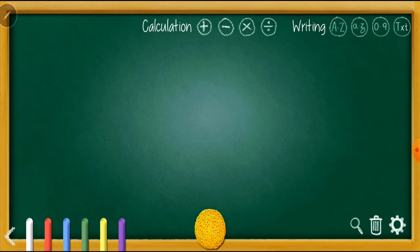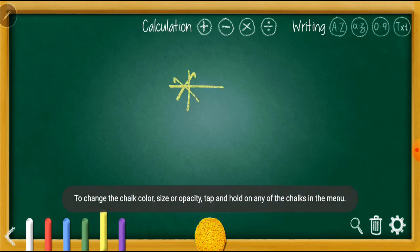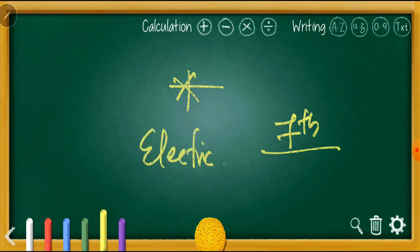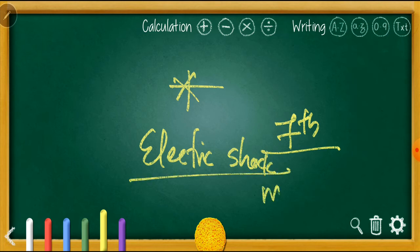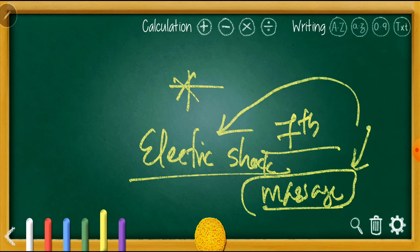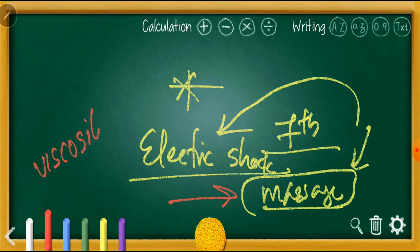Now here is a very important question — mark it with a star. In seventh standard, we studied that if a person gets an electric shock, we have to massage them, rubbing their palms and all. The question is: can you answer why we massage a person who has gotten an electric shock? We can answer this based on viscosity or viscous force.